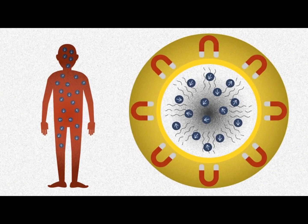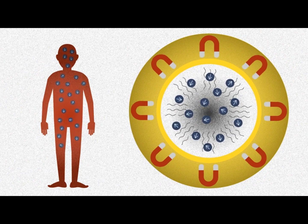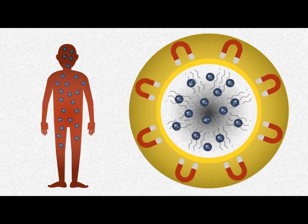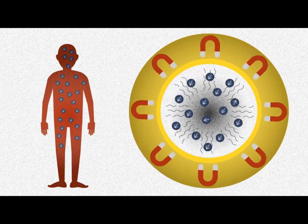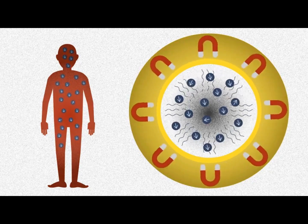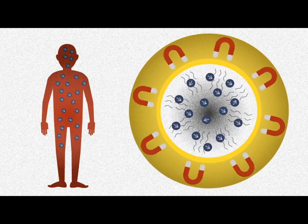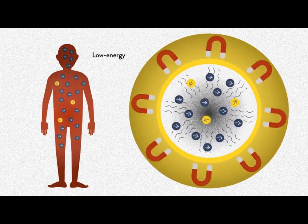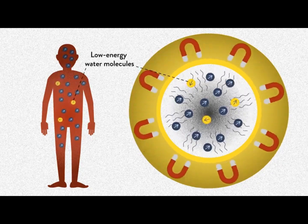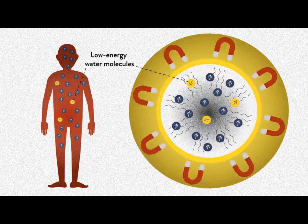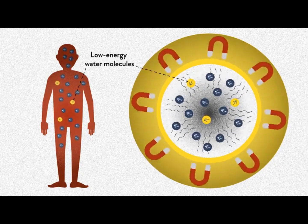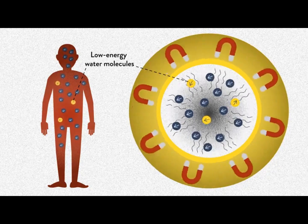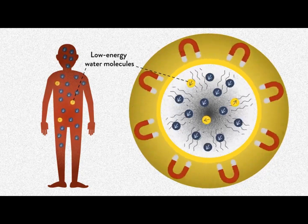Normally, the water molecules inside us are arranged randomly, but when we lie inside the magnetic field, most of our water molecules move at the same rhythm or frequency as the magnetic field. The ones that don't move along the magnetic field are called low-energy water molecules.